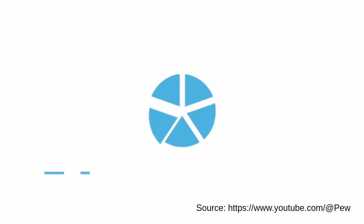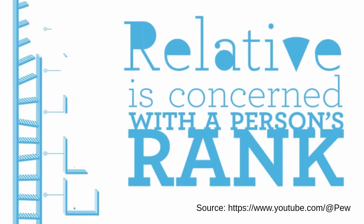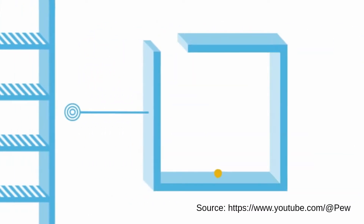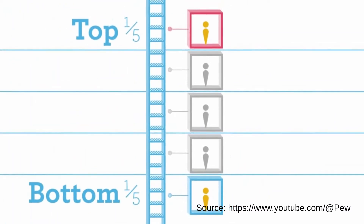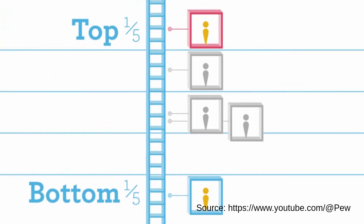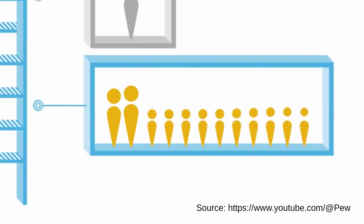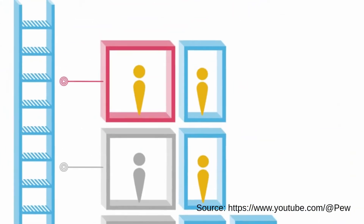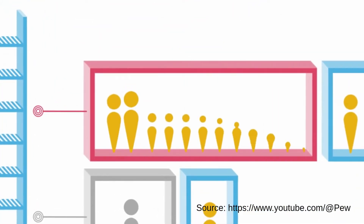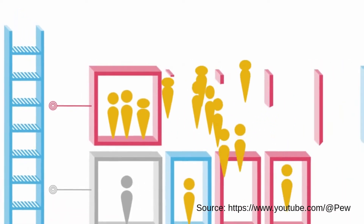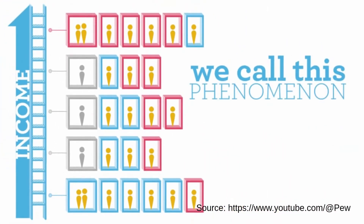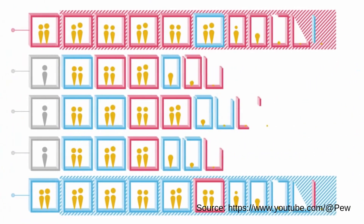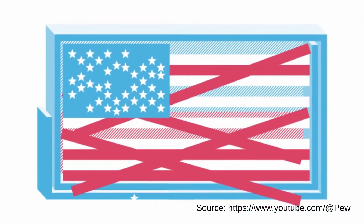The second measure of economic mobility is relative, which is concerned with a person's rank within the income distribution as a whole. By this measure, we see a glass half-empty, because many Americans — especially those at the top and bottom of the income ladder — are unlikely to experience relative mobility. Of those whose parents were in the bottom fifth of the income distribution, about 40% remain in the bottom themselves as adults. Similarly, of those whose parents were in the top fifth, about 40% remain in the top themselves. We call this phenomenon 'stickiness at the ends.' By this measure, the American dream is struggling.